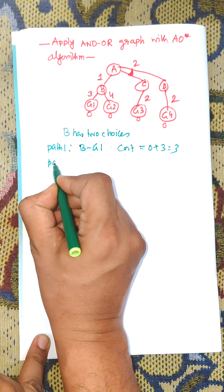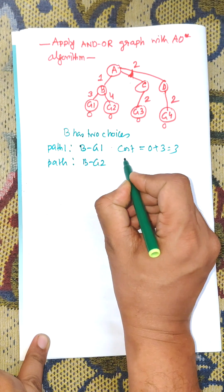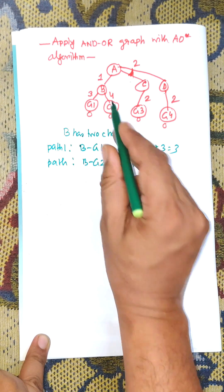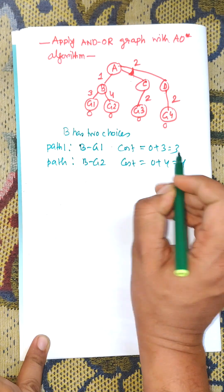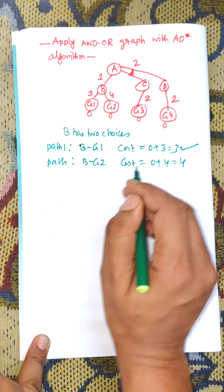And path 2 for B, that is B to G2, and the cost is 0 plus 4, 0 plus 4 equal to 4. Among B to G1 is the minimum. Here 3 is the minimum.